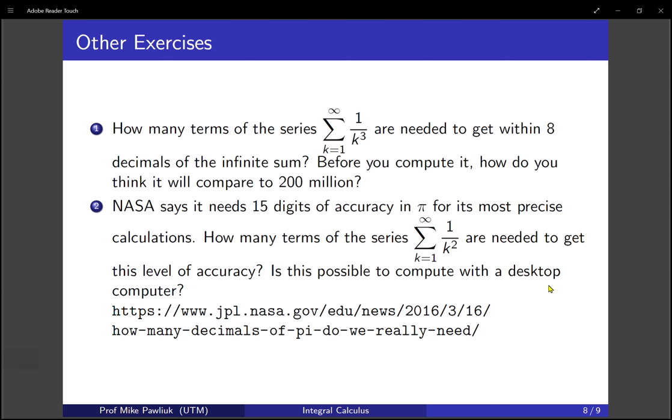So here are some other exercises. How many terms of the series the sum from k equals 1 to infinity of 1 over k cubed, are needed to get within 8 decimal places of the infinite sum? Before you compute it, how do you think it will compare to 200 million? NASA says it needs 15 digits of accuracy for pi in its most precise calculations. How many terms of the series the sum from k equals 1 to infinity of 1 over k squared, are needed to get this level of accuracy? Is this possible to compute with a desktop computer? Here's a link to the article.